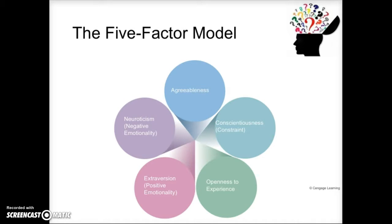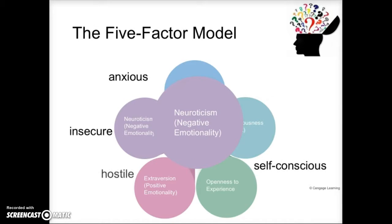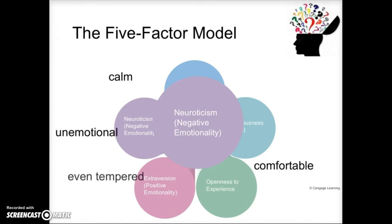The next trait is neuroticism, also referred to as negative emotionality. People who are highly neurotic tend to be self-conscious, anxious, insecure, vulnerable, and sometimes hostile — this is where unhappy or negative emotions come into play. The opposite is not necessarily happiness, but a lack of anxiety or hostility. People who are low on neuroticism tend to be calm, unemotional, even-tempered, comfortable, and unshakable — hard to rattle because they are so steady.